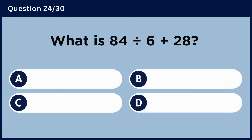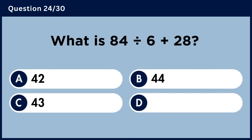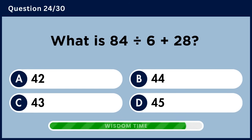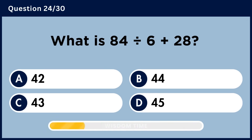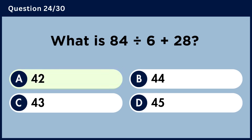What is 84 divided by 6 plus 28? Answer A: 42.